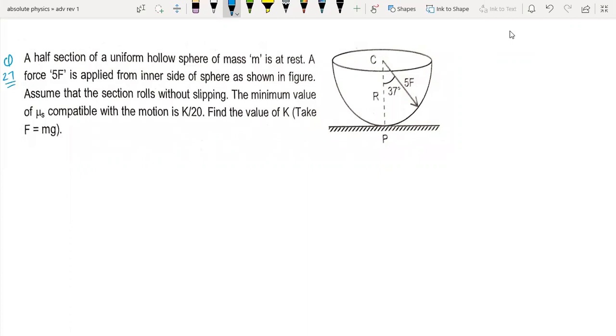The question is: a half section of uniform hollow sphere of mass M is at rest. A force 5F is applied from inner side of the sphere as shown, so it is a 5F force acting this way.